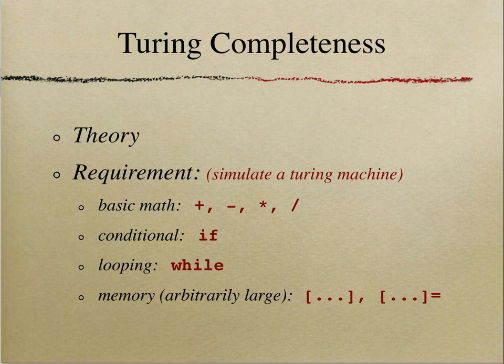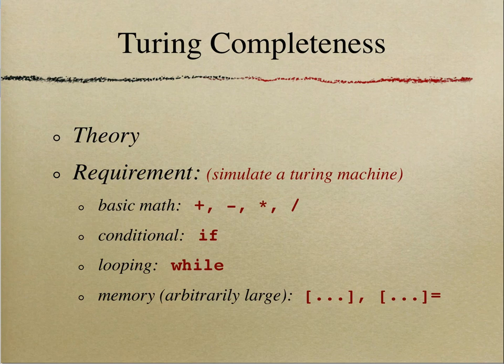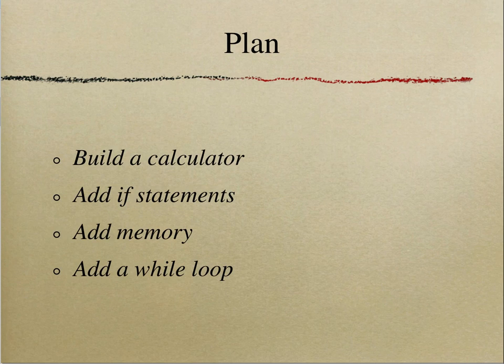So here are the basic requirements. Ultimately, in order to prove it's Turing complete, we should be able to simulate a Turing machine in our language, which the language we're writing today will be able to do. We're just going to hit the basic requirements, which are the basic math operators, conditionals, while loops, and the ability to have a potentially infinite memory. All actual memories are finite but it could be an arbitrarily large memory, and that meets the requirements of a Turing machine. So here's the plan: we're going to start by building a calculator, then add if statements, memory, and the while loop. Let's jump over and look at some code.